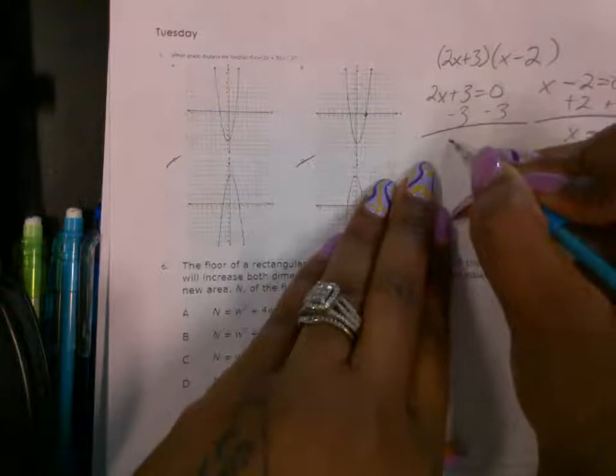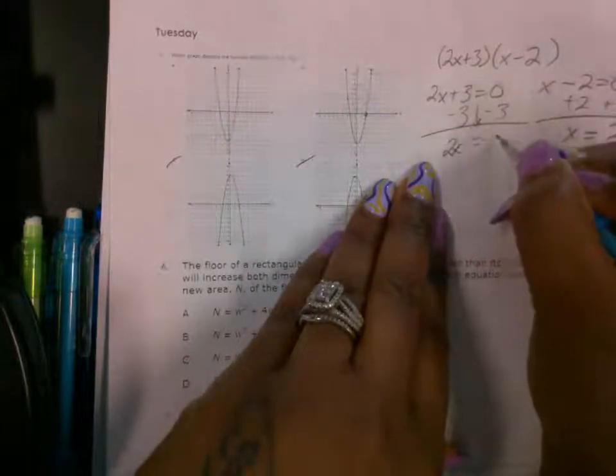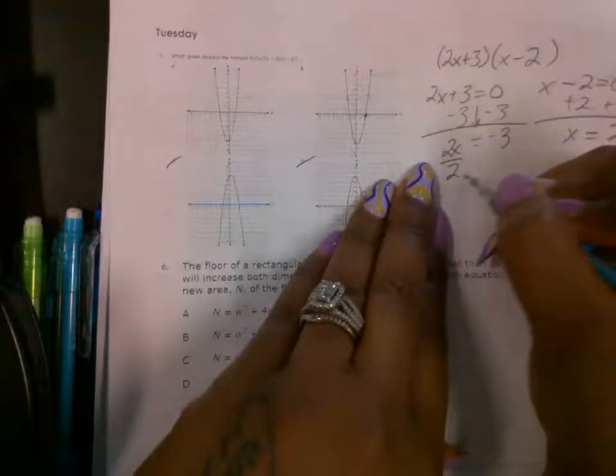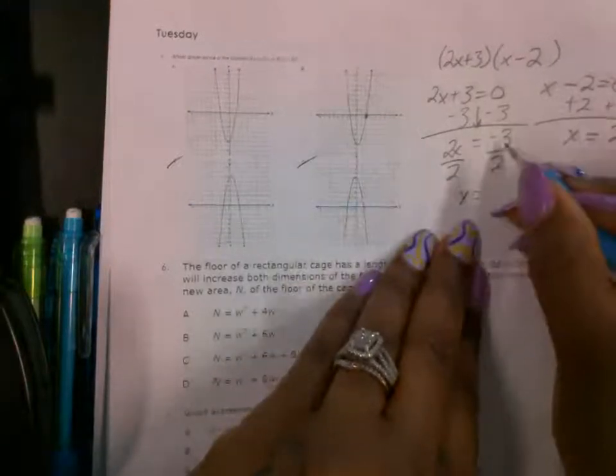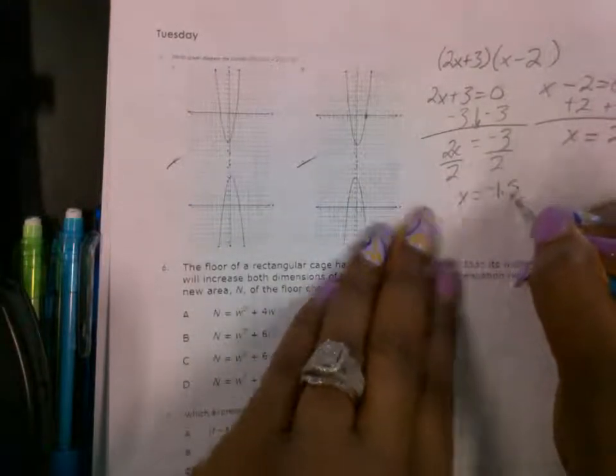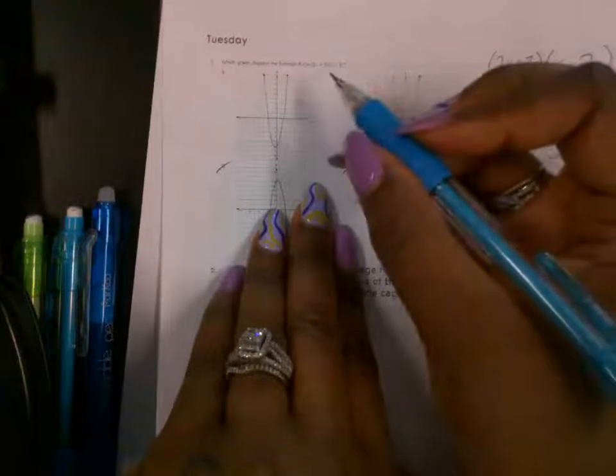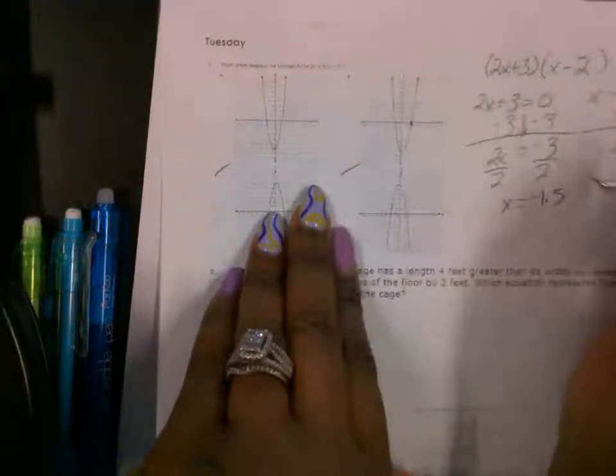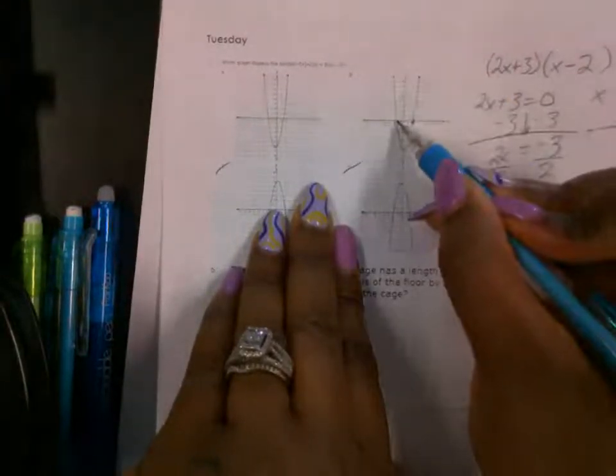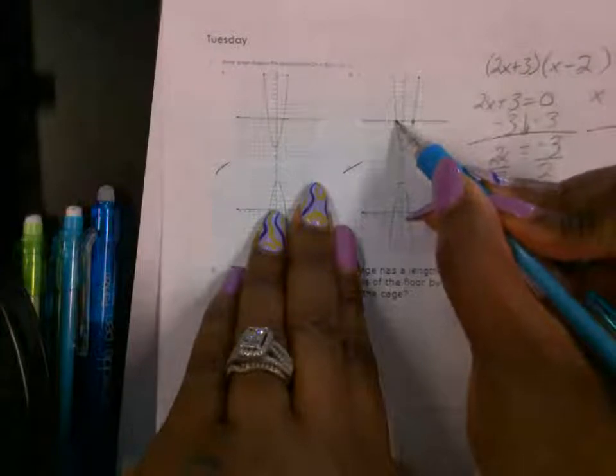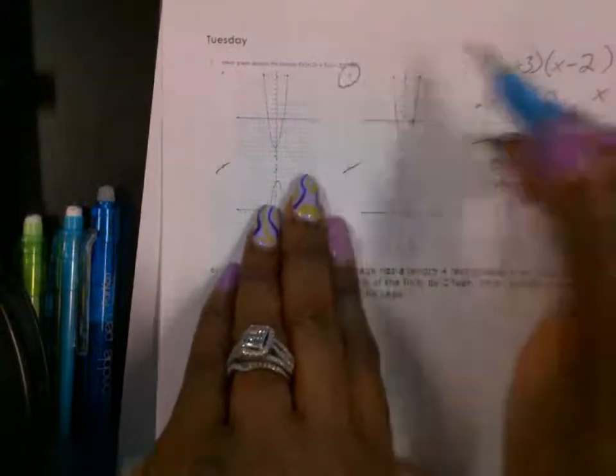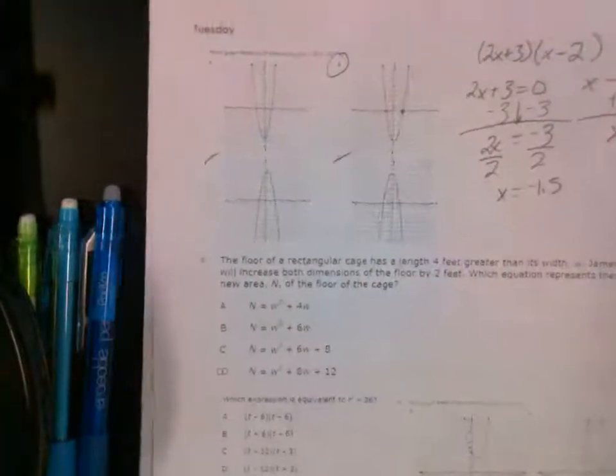Subtract 3 on both sides. This gives us 2x equals negative 3. Divide both sides by 2, so you get negative 1.5. So this should cross at negative 1.5, and this right here is negative 1.5. So B is going to be the answer for the first one.